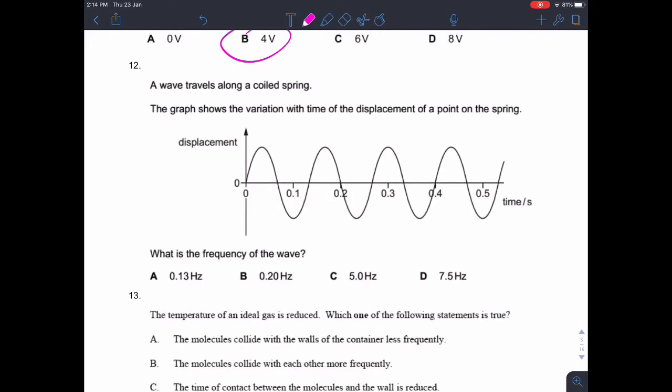Question 12. A wave travels along a coiled spring. The graph shows variation with time of displacement of a point on the spring. We've got a nice clear intercept here at 0.2 seconds and this is time on this axis, so we can see that 1.5 time periods is 0.2 seconds. So the time period for one is 0.2 seconds divided by 1.5. The frequency is 1 over the time period, so the frequency is 1.5 divided by 0.2, which gives us 7.5 hertz.